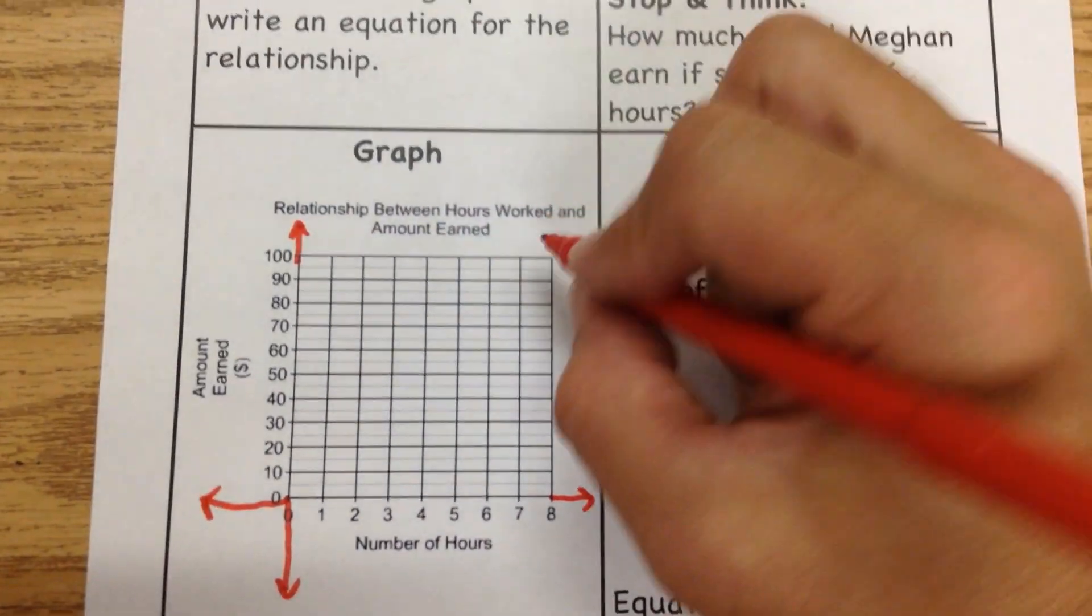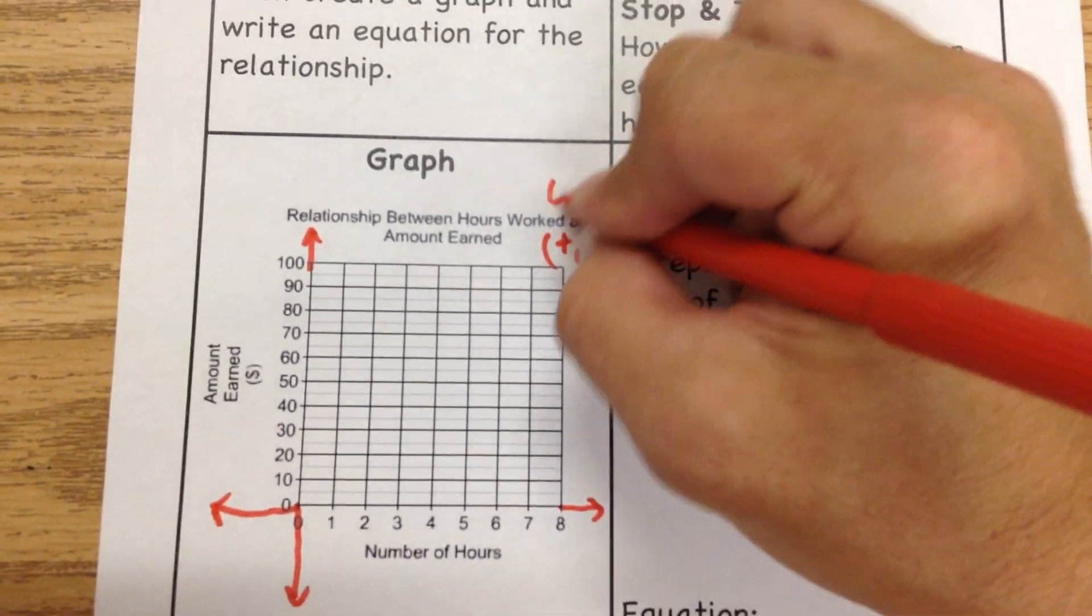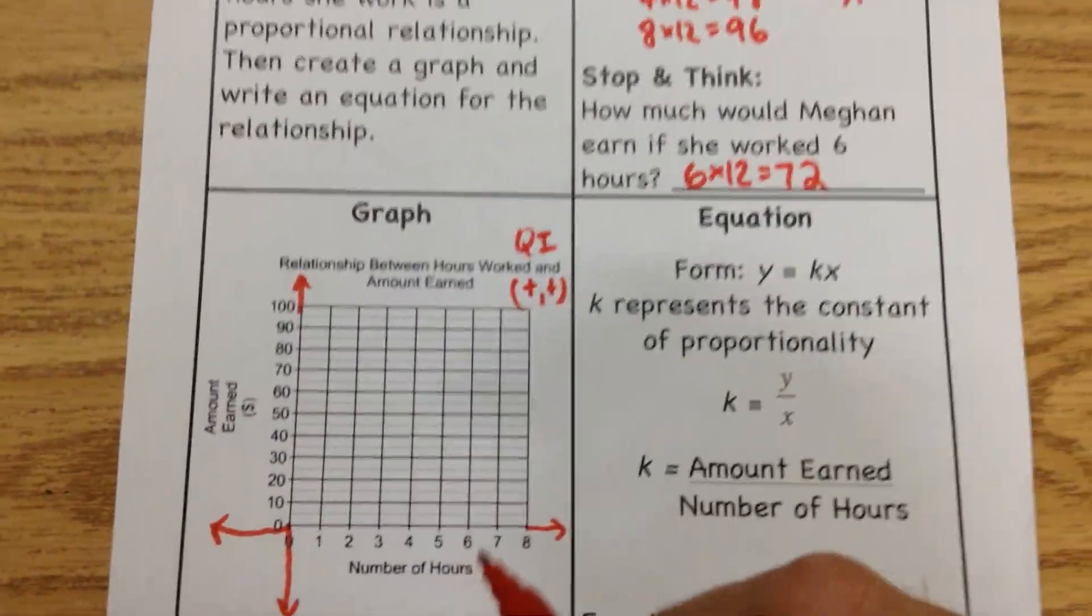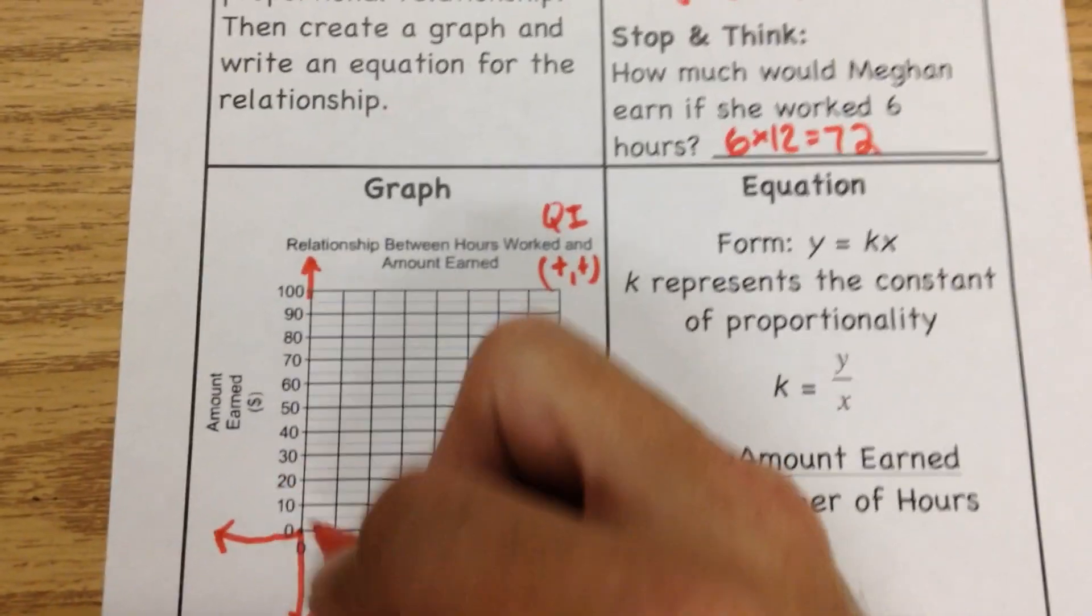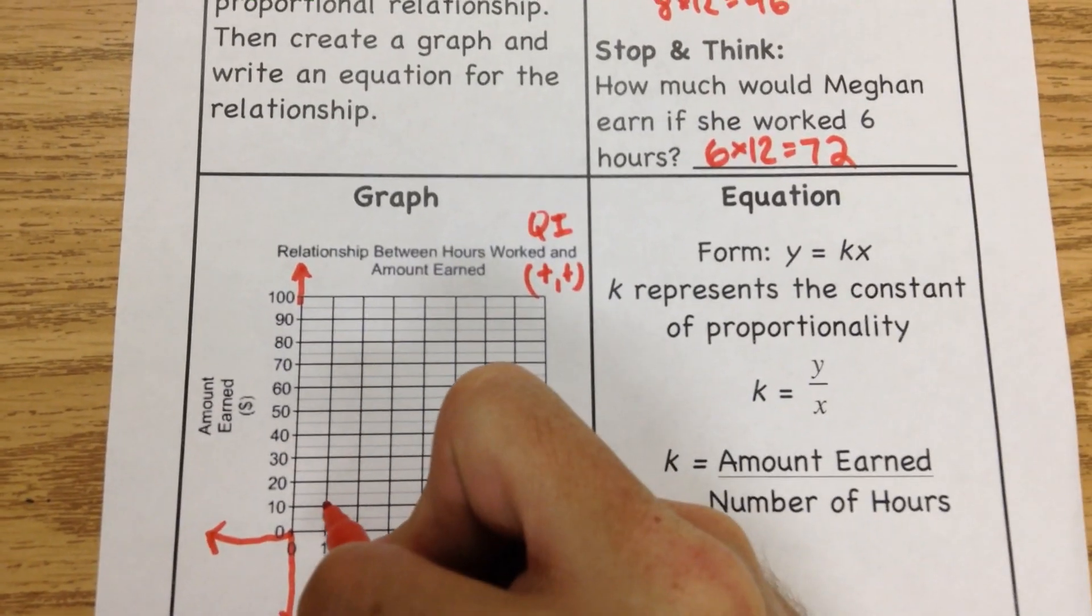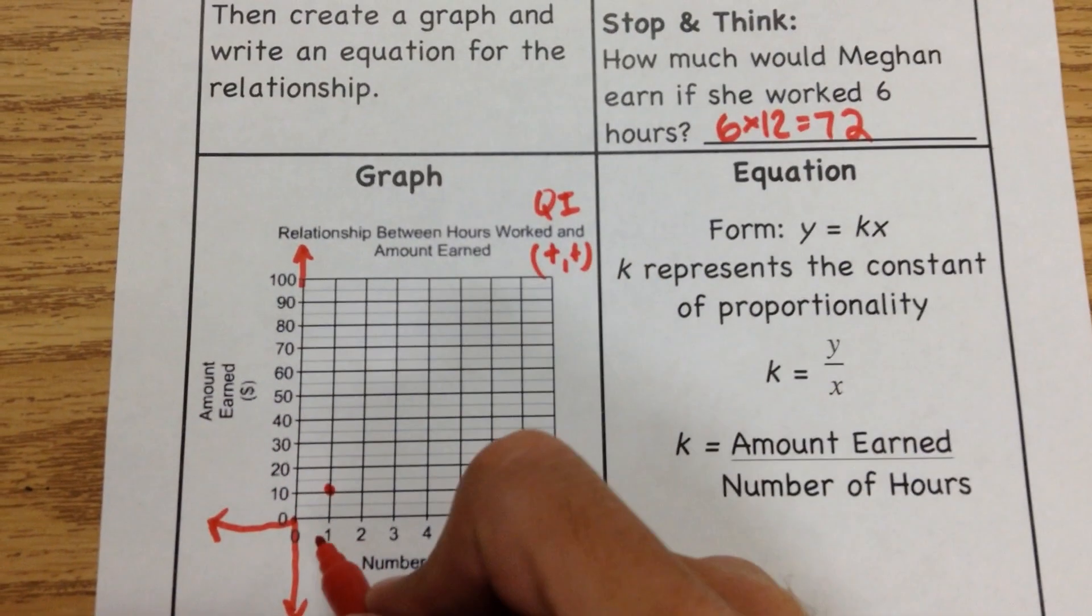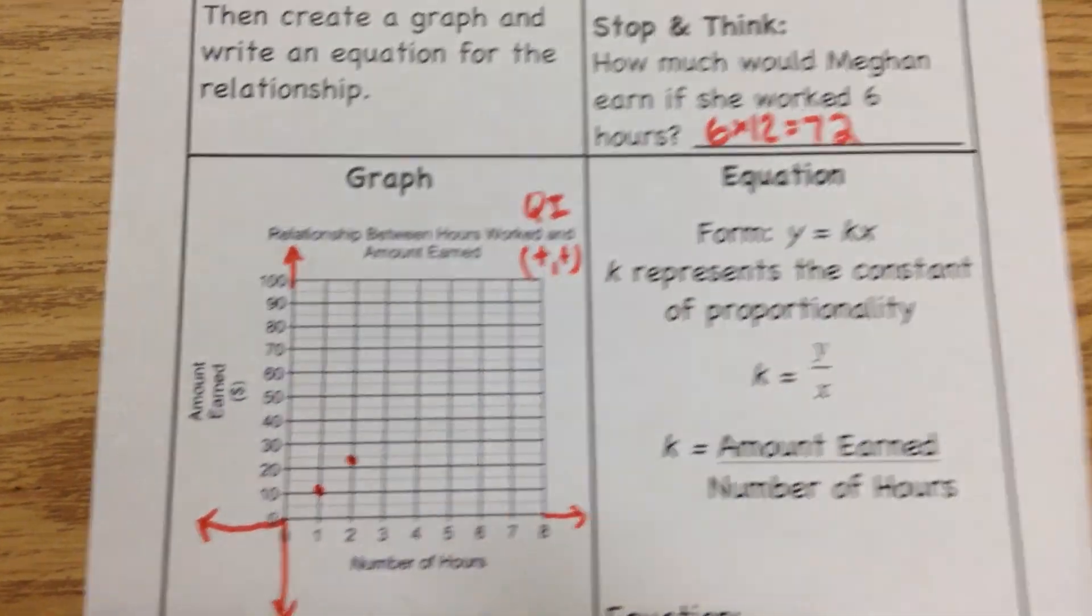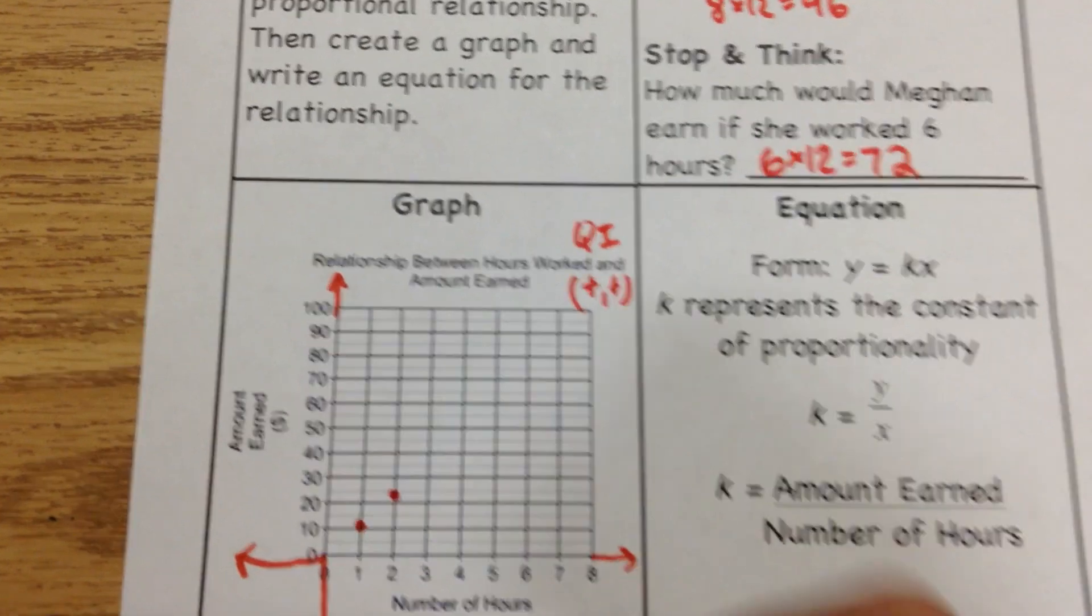We're in the positive, positive quadrant, that's quadrant 1. So we're going to take these four points we had. We're going to look up here. We had one hour of work, $12. So we go one hour of work, $12 is about right there. Then for two hours of work, we come up here to about $24, which is just under $25. Then we had for four hours of work was $48. So four hours of work, $48 would be just under the $50.